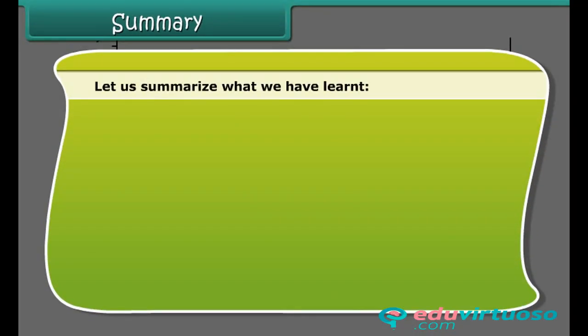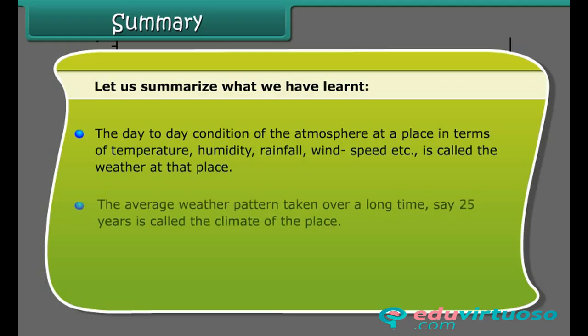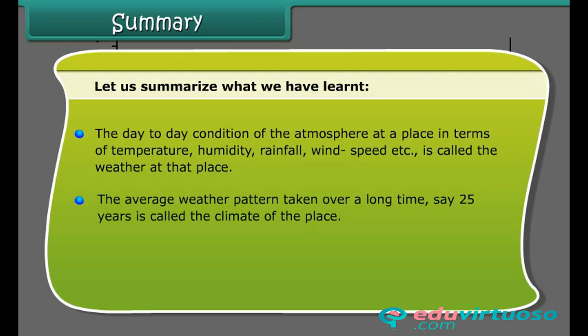Let us summarize what we have learned. The day-to-day condition of the atmosphere at a place in terms of temperature, humidity, rainfall, wind speed, etc. is called the weather at that place. The average weather pattern taken over a long time, say 25 years, is called the climate of the place.